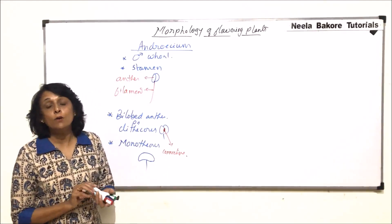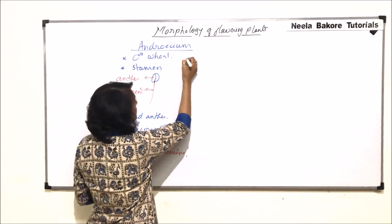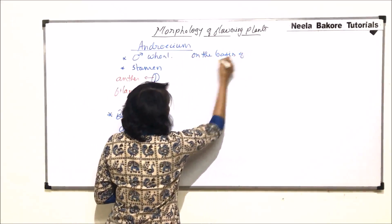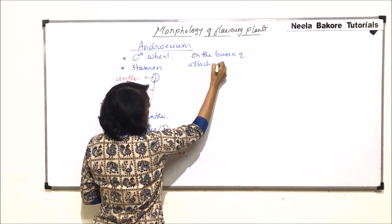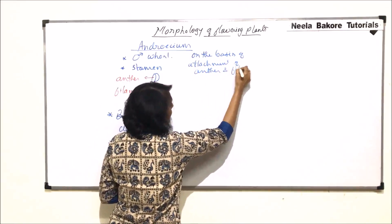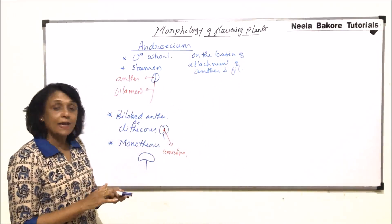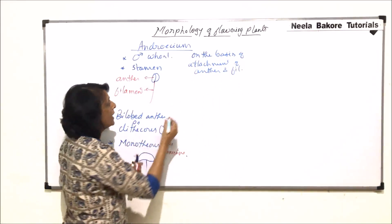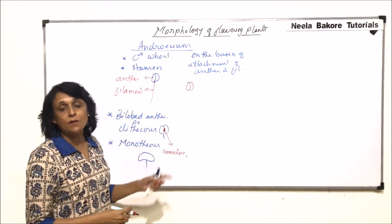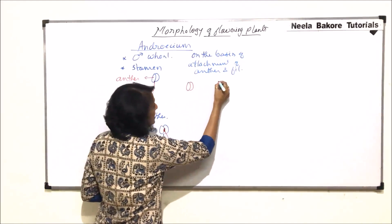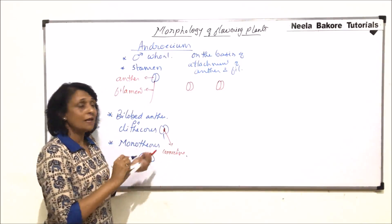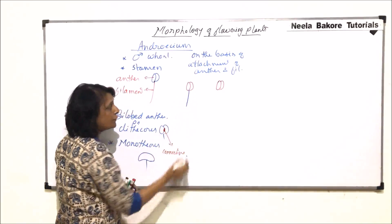Now, on the basis of attachment of the filament to the anther, we are going to classify these anthers. We will draw these first and then talk about the term which can be given to each. We are talking about the dithecous type because, as we said, this is the most common type.